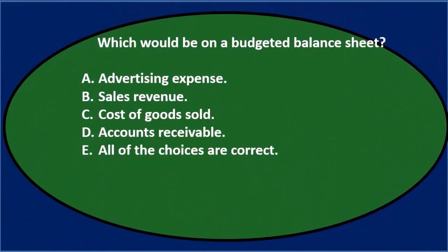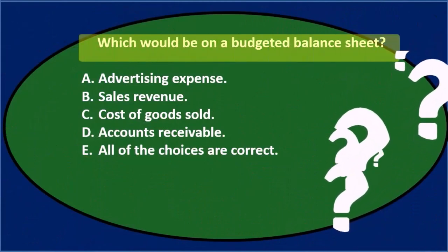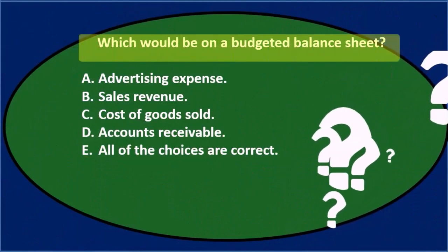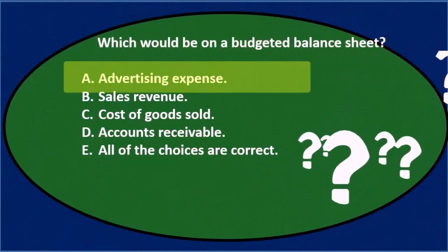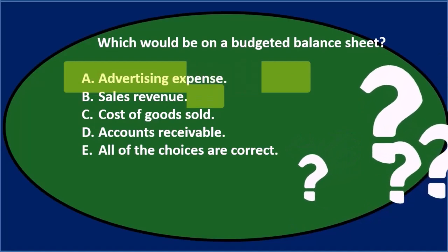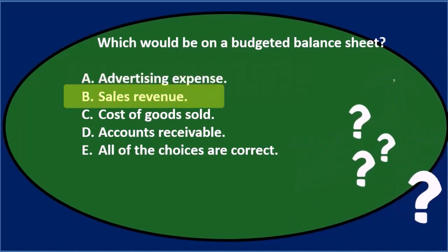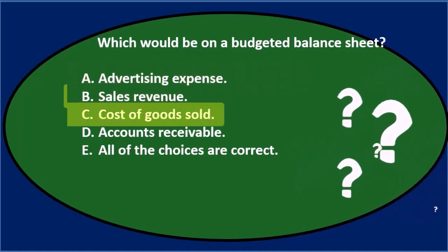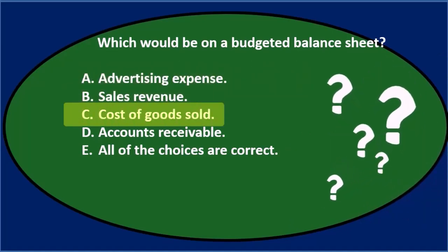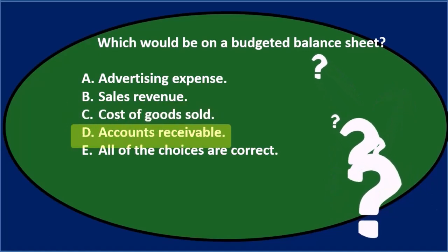First question: which would be on a budgeted balance sheet? A. Advertising expense. B. Sales revenue. C. Cost of goods sold. D. Accounts receivable.